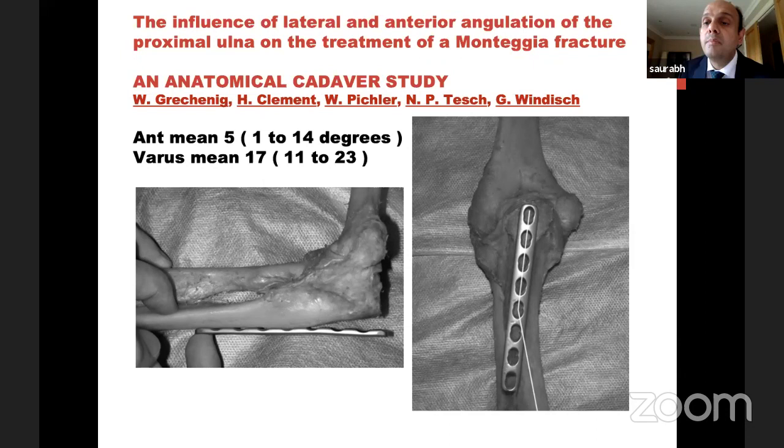Finally, Monteggia fractures. The most important point: it's a fairly common fracture. Number one — the relationship of the radial head to the ulna (PRUJ) is gone, unlike trans-olecranon fractures. Number two — because the radial head has come out of the annular ligament, very occasionally it may not go back. In that case you may need to do the relevant approach, take off the annular ligament, reduce the radial head, and reattach the annular ligament.